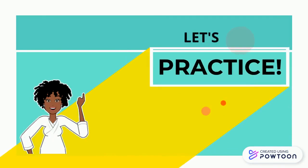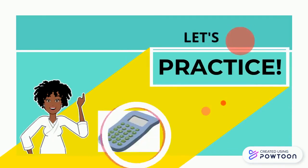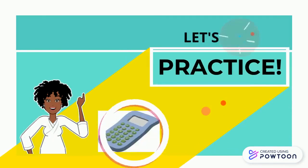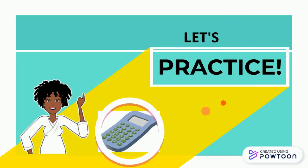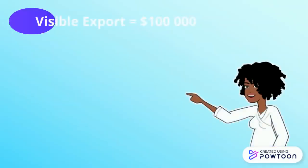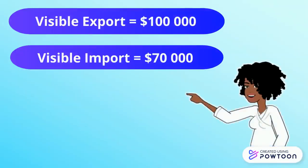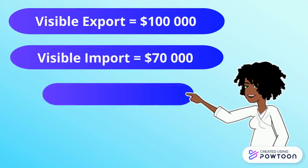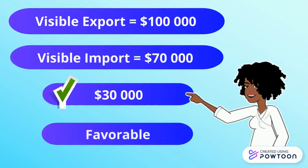So let's practice — you're going to need a calculator. Let's suppose our visible exports were $100,000 and our visible imports were $70,000. What would our balance of trade be? Of course, $30,000 surplus, and that means our balance will be favorable.